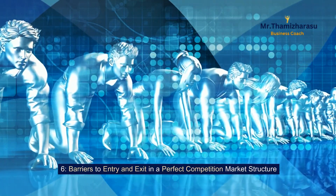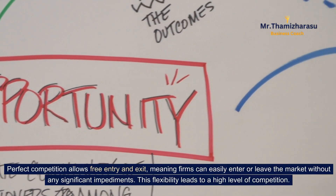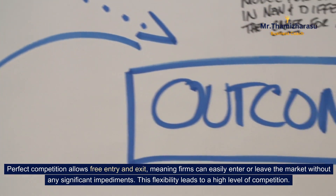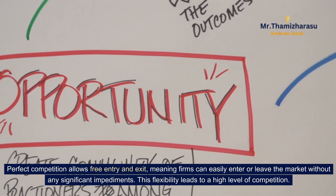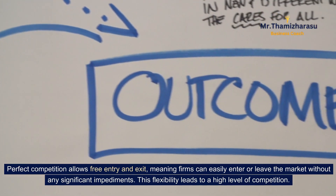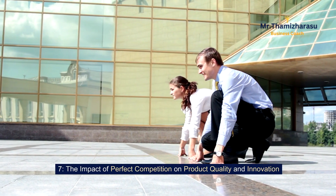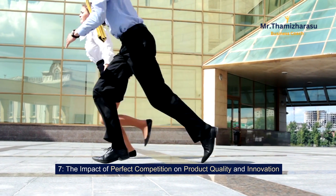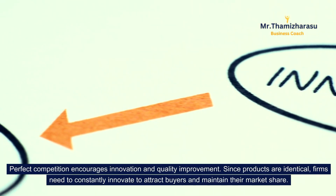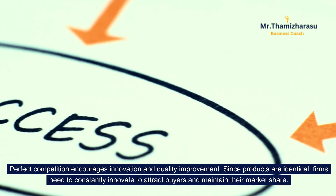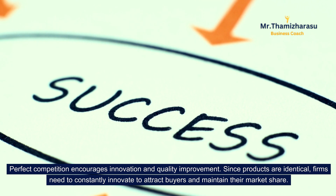6. Barriers to entry and exit in a perfect competition market structure. Perfect competition allows free entry and exit, meaning firms can easily enter or leave the market without any significant impediments. This flexibility leads to a high level of competition. 7. The impact of perfect competition on product quality and innovation. Perfect competition encourages innovation and quality improvement. Since products are identical, firms need to constantly innovate to attract buyers and maintain their market share.